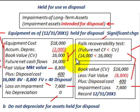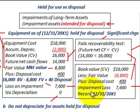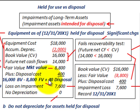To calculate our impairment loss, we take the carrying value of $16,000 and subtract the fair value of $8,800. In this case, because the asset is held for disposal, we also add the disposal cost of $400. So the book value of $16,000, less the fair value of $8,800, plus disposal cost of $400, gives us an impairment loss of $7,600. This is what we'd be recording on 12/31/20x1.